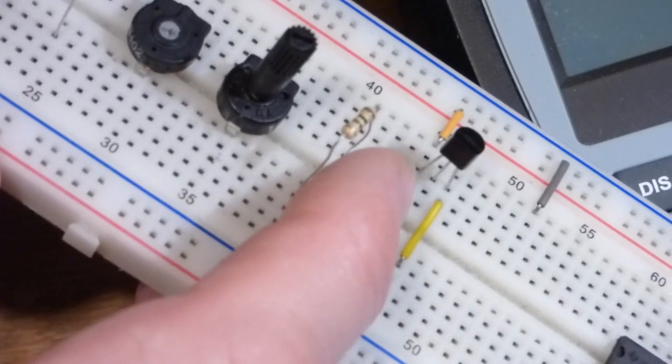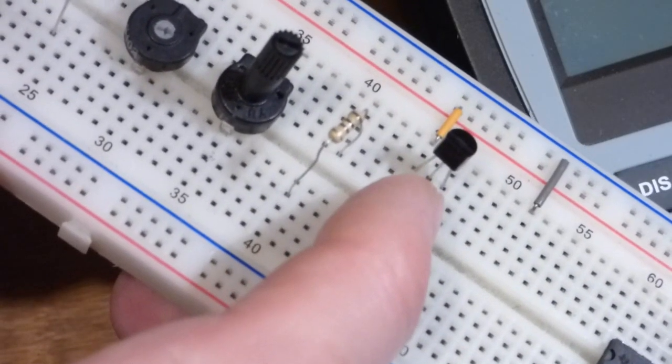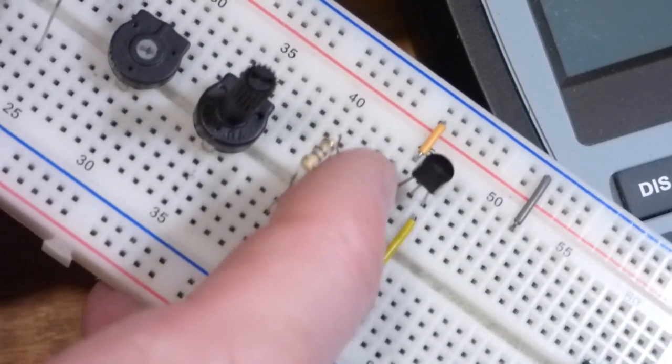The flat side is facing us right now. This is the V plus pin, that's the R pin, and that's the V negative pin.